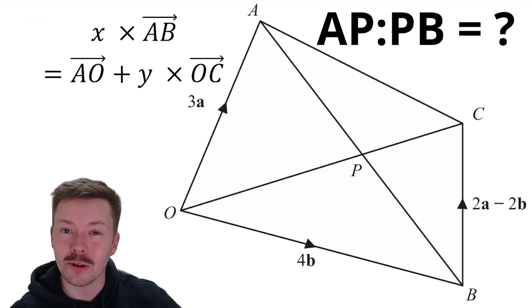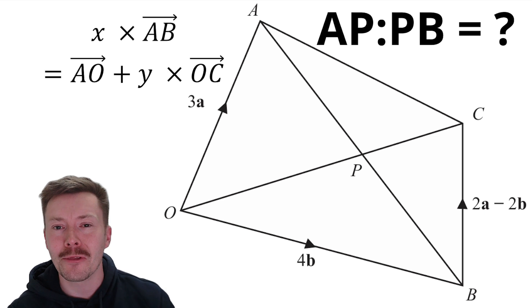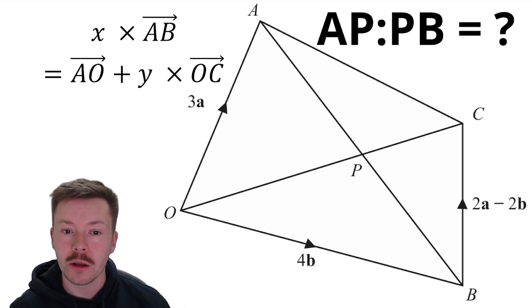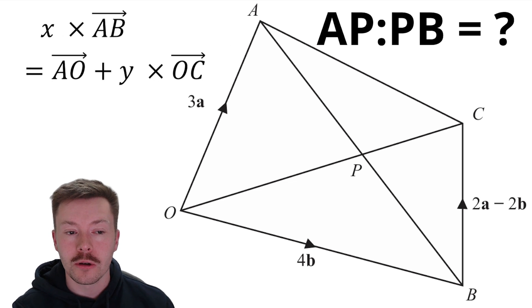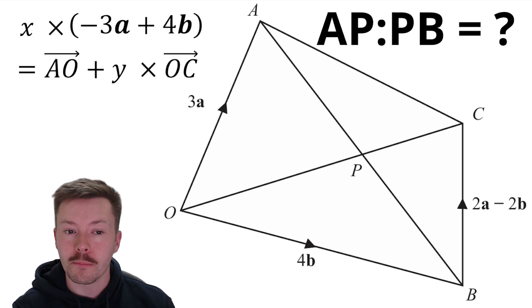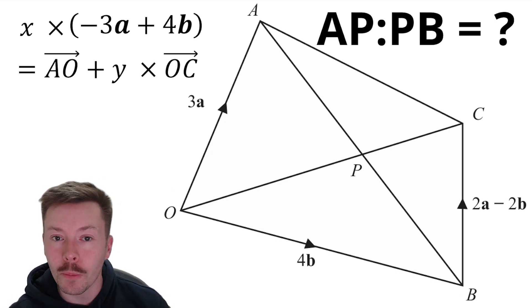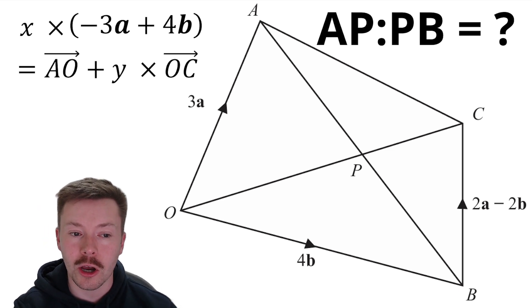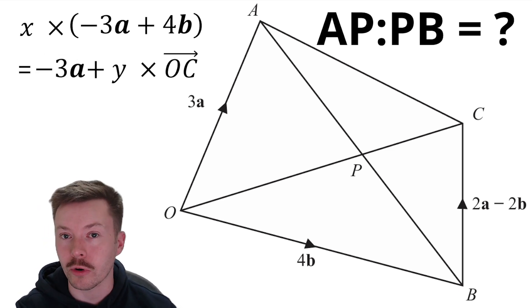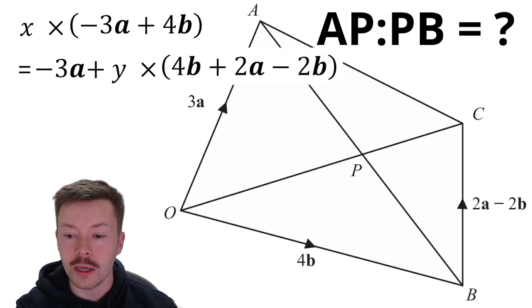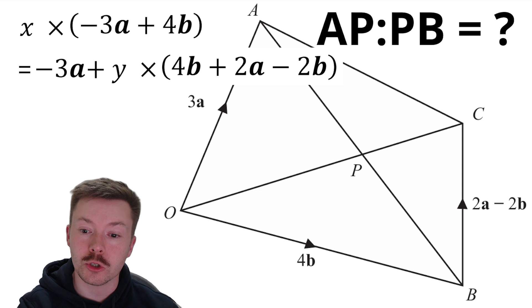From there, like I was just saying, you can start to replace the vectors with actually what they are in terms of A's and B's. So A to B is made up of minus 3A, so that's A to O, and then plus 4B. Now, obviously, it's minus 3A because it's going in the opposite direction of the vector, so it becomes negative. Okay, A to O, we can then replace with minus 3A. And O to C, we can replace with 4B plus 2A minus 2B.